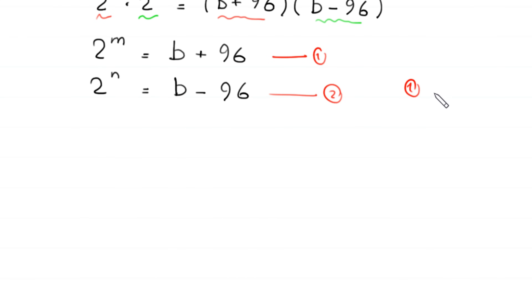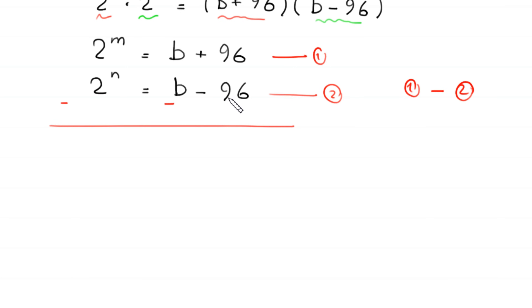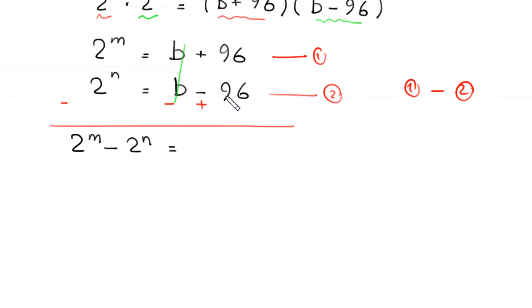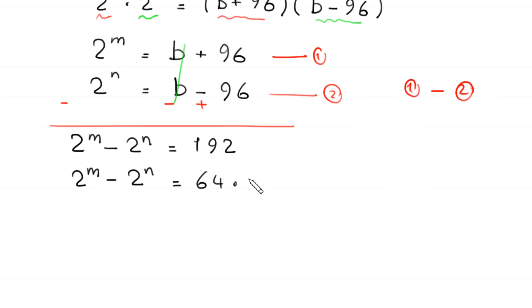From equation 1 we subtract equation 2. The b terms cancel, and 96 plus 96 gives 192. So 2 to the power m minus 2 to the power n is equal to 192. Next, 192 can be written as 64 times 3.